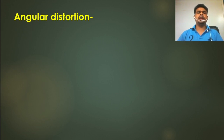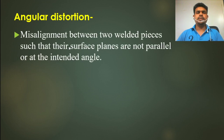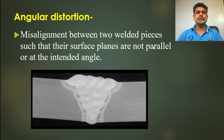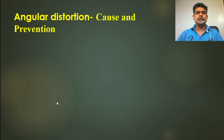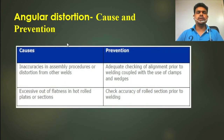Angular distortion is another type of imperfection. It is a misalignment between two welded pieces such that their surface planes are not parallel or not at the intended angle. Unlike linear misalignment where one plate is up and one is down, in angular distortion the root is almost the same but an angle forms between the plates. The cause and prevention are the same as for linear misalignment.